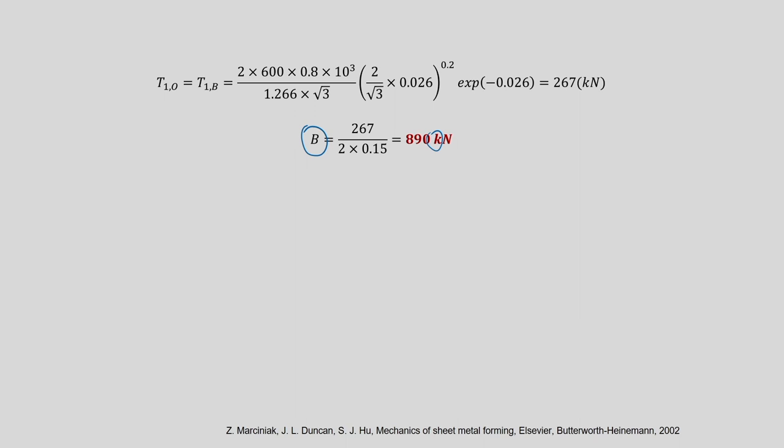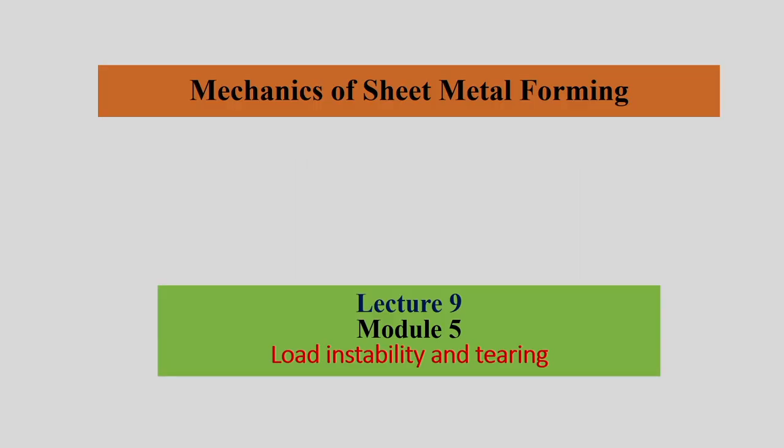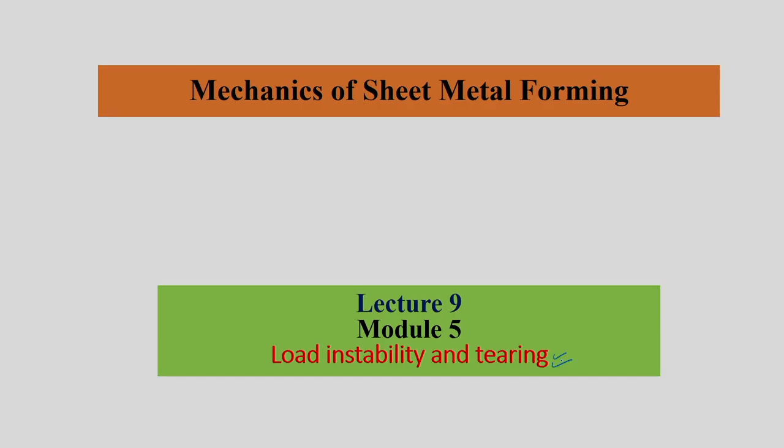Now we are going to start discussing about the next two modules in mechanics of sheet metal forming — that is basically load instability and tearing. This particular situation — load instability and tearing — comes when you deform a sheet beyond uniform plastic deformation.